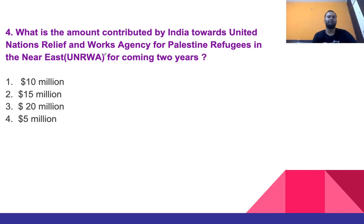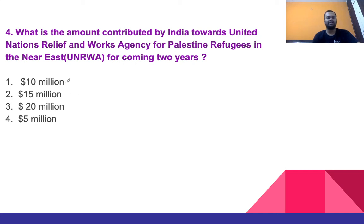Question 4: What is the amount contributed by India towards the United Nations Relief and Works Agency for Palestine Refugees in the Near East (UNRWA) for the coming two years? Options: 10 million, 15 million, 20 million, or 5 million. The right answer is 10 million.